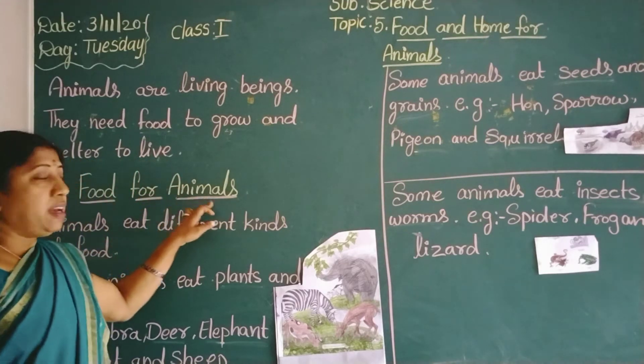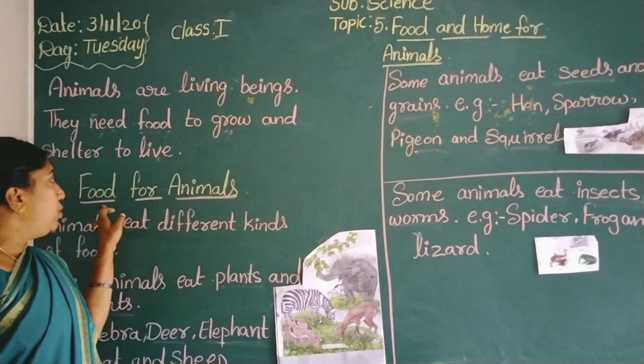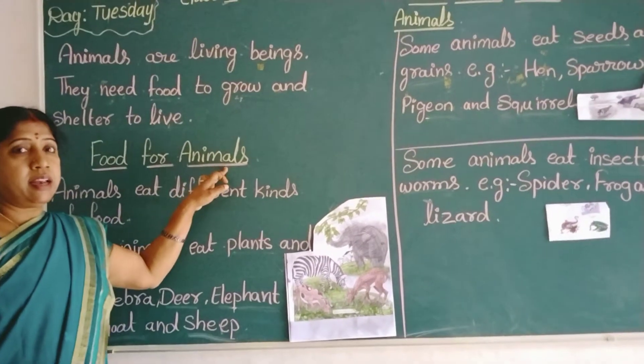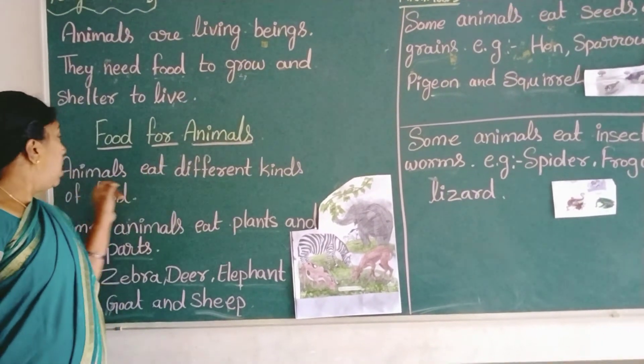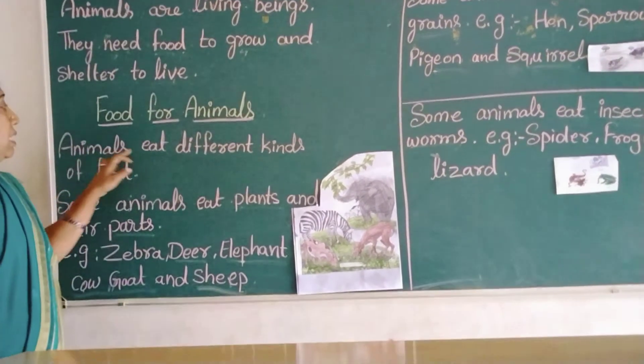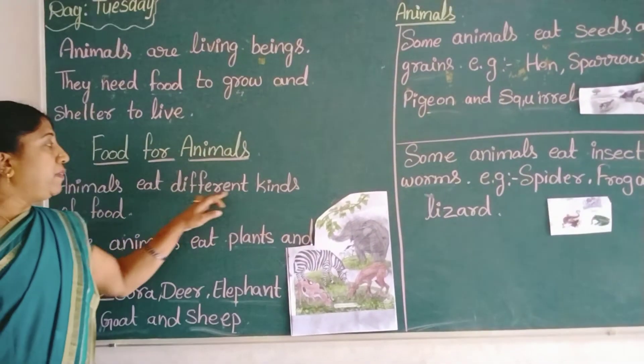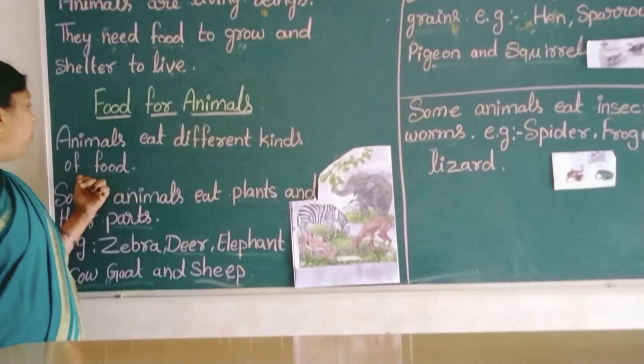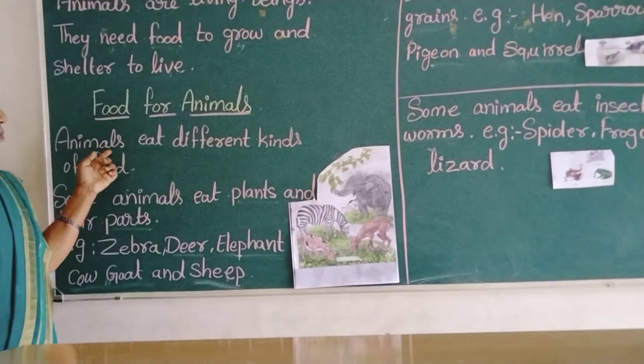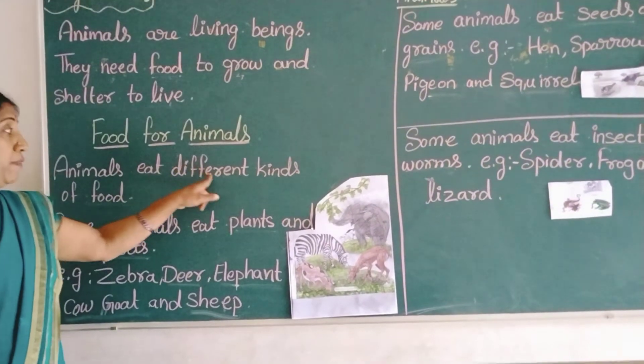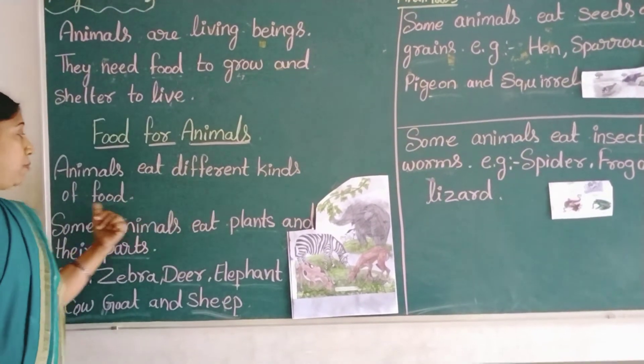Food for animals. Animals eat different kinds of food.